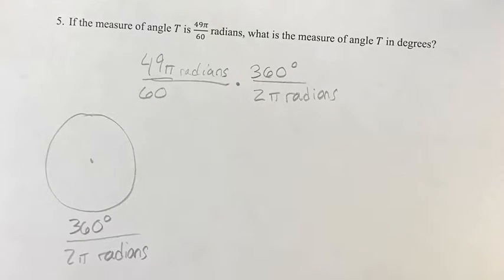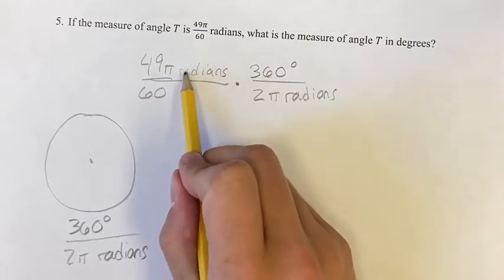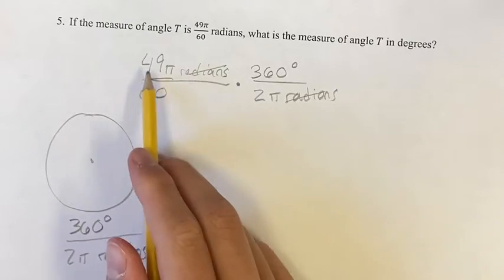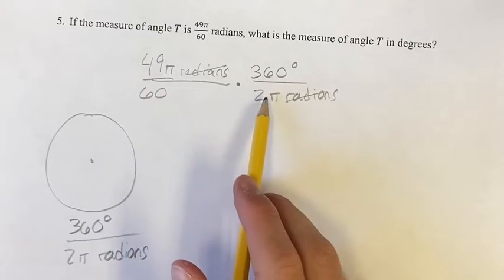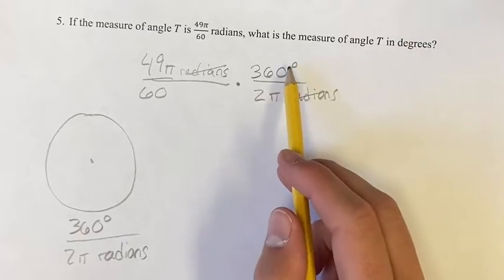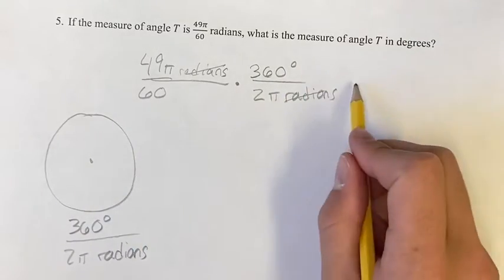This is how we do most of our unit conversions. Radians cancel out, and we're left with 49 times 360 over 60 times 2π, whatever that turns out to be, degrees. So we have whatever the value is in degrees.